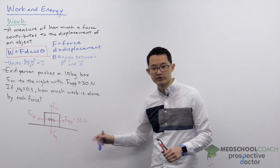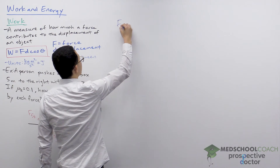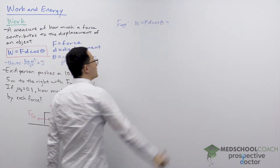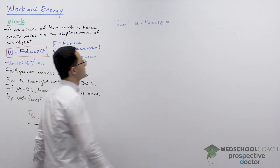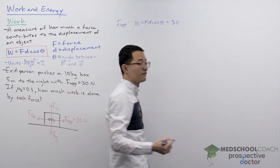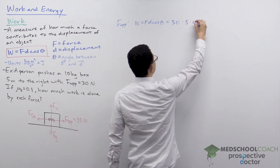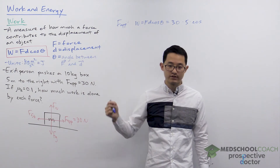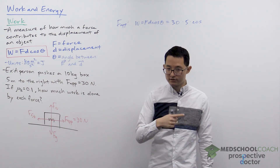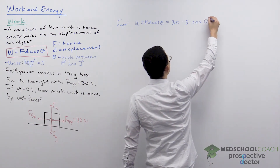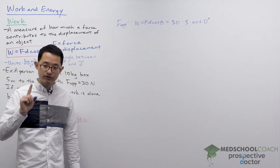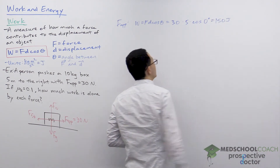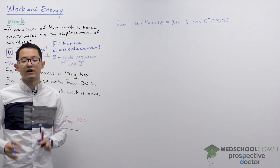Starting with the applied force, we use work equals F times D times cosine theta. The applied force is 30 newtons, the displacement is 5 meters to the right, and since the applied force and displacement are both to the right — the same direction — the angle between them is zero degrees. Cosine of zero degrees is one. So we have 30 times 5 times 1, which gives us 150 joules. The applied force does 150 joules of positive work.